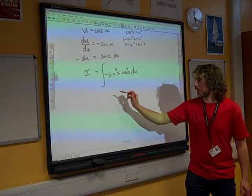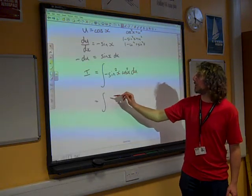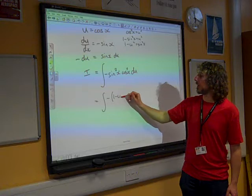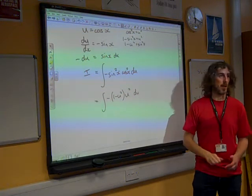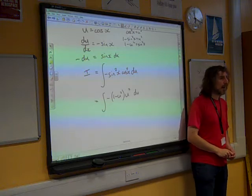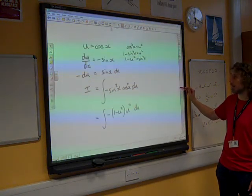So sin squared is 1 minus u squared. So I think I'm ready to finish off my substitution now. I've got the sin squared is 1 minus u squared, cos squared is u squared, and I've got du. And I suppose I haven't done anything with the limits yet, so we'll go back and do that as well.